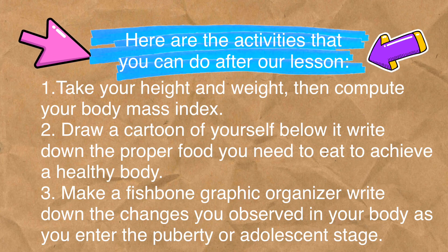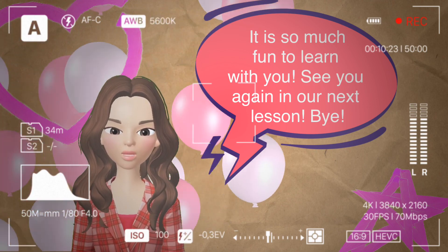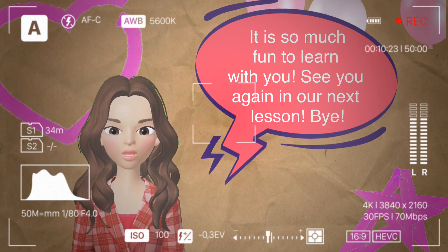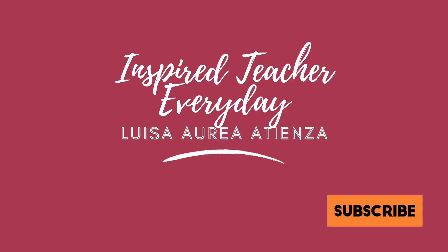Here are the activities you can do after our lesson. First, take your height and weight, then compute your Body Mass Index or BMI. Number two, draw a cartoon of yourself and below it write down the proper food you need to eat to achieve a healthy body. Number three, make a fishbone graphic organizer and write down the changes you observe in your body as you enter the puberty or adolescent stage. It was so much fun to learn with you — see you again in our next lesson, bye!